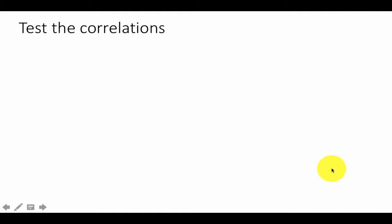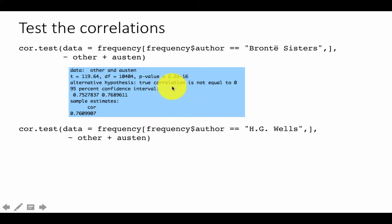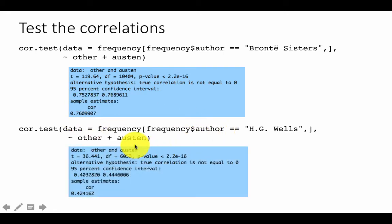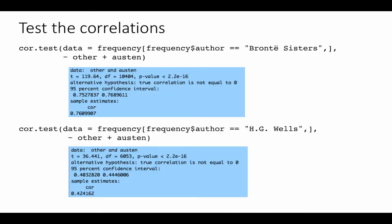For a more quantitative view, we can run cor.test to compute a correlation coefficient with a 95% confidence interval. The correlation between Brontë sisters and Austen is approximately 0.76, while the correlation between HG Wells and Austen is considerably lower at about 0.42. This quantitatively confirms the visual hypothesis: Austen and the Brontë sisters are much more closely related in word usage than Austen and HG Wells.